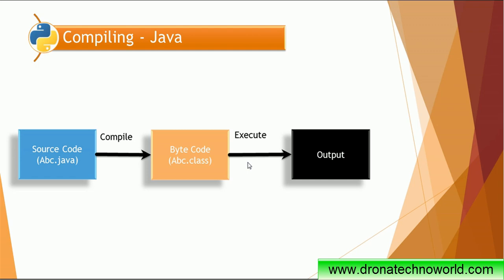Once the bytecode is ready, that is the .class file is ready, we can execute it on the virtual machine — that is the Java Virtual Machine — and we'll get the output. So if you notice, between your source code and the actual execution, a compiler comes into the picture which converts the source code from .java to .class. This is the process of compiling. In Java technology, compiling is required before execution. Another thing to remember here is that not just a single statement is compiled — the whole .java file itself is compiled, and then it's executed. So there is some time required to compile that file before execution, and compiling might take some time in several cases.